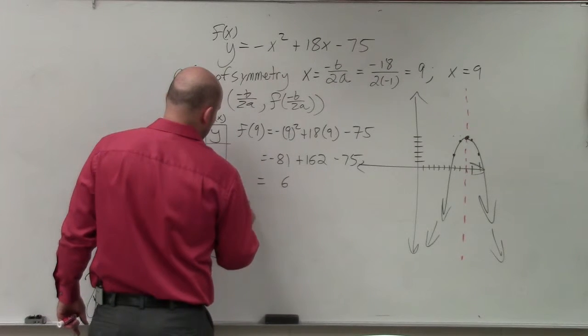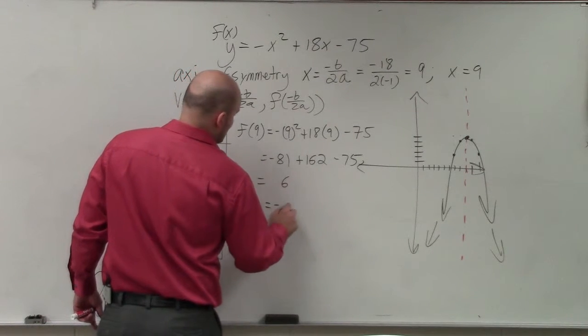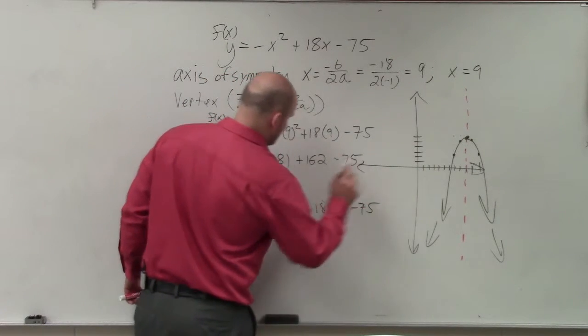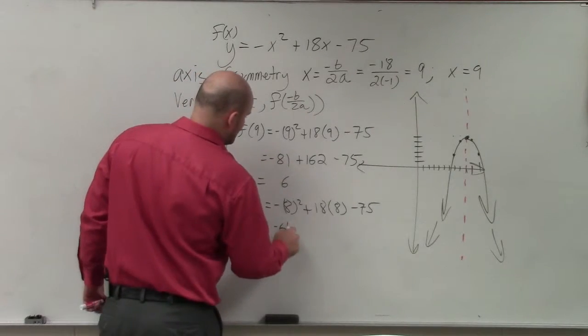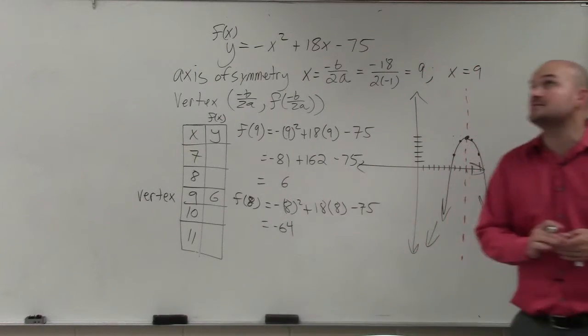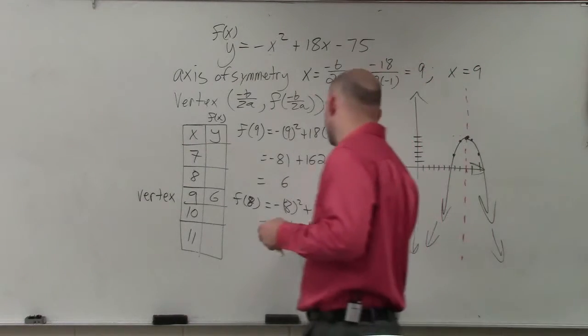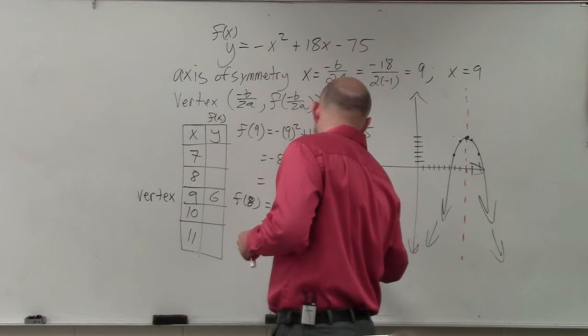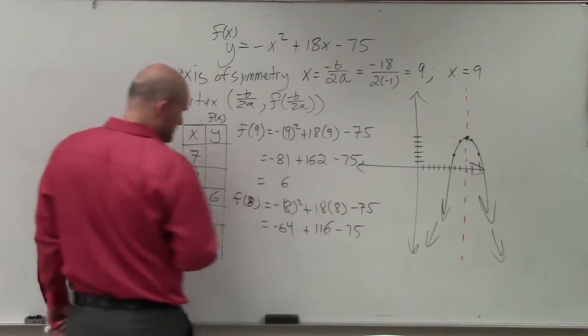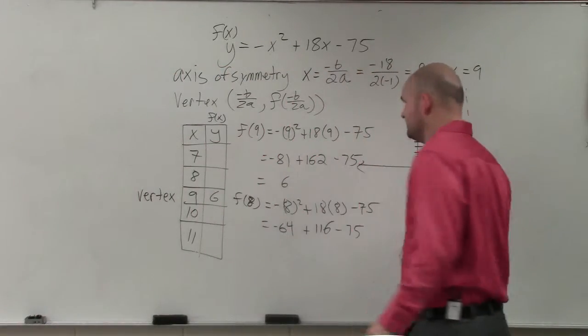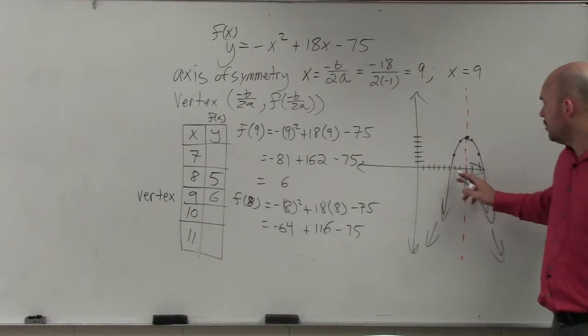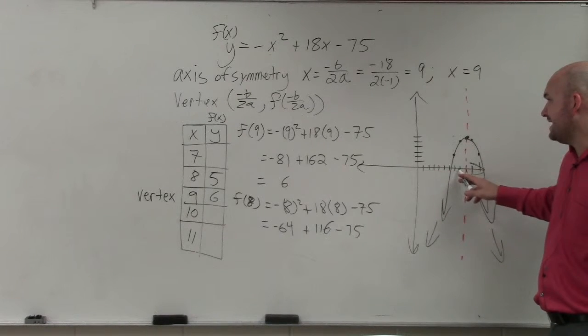I'll do, what if you plugged in f of 8? So that'd be negative 8 squared plus 18 times 8 minus 75. 8 squared is going to be 64 times negative 1 is negative 64. 8 times 18, that's going to be times 36, so that's going to be 116. And you will get, when you go ahead and combine those 65, 70, you're going to get 5. Over there, so you go over 8, up 5,